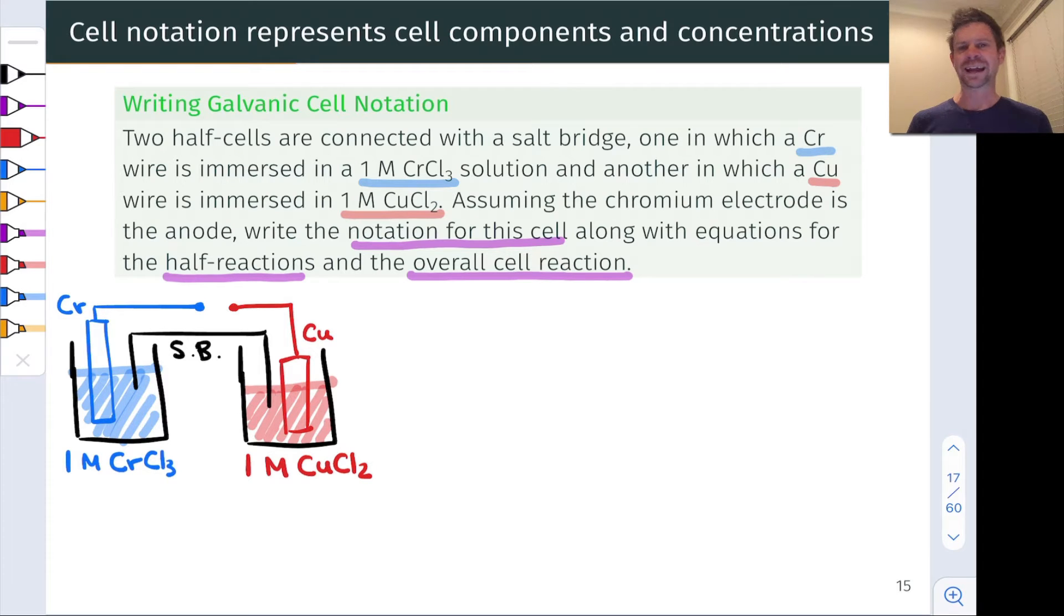Remember, we know the anode and the cathode for the time being based on the fact that the problem told us to assume the chromium electrode is the anode. In a future video, we'll learn how to deduce this on our own using standard reduction potentials or standard electrode potentials. But for the time being, this is the galvanic cell we're looking at and we know that electrons are going to flow from left to right this way.